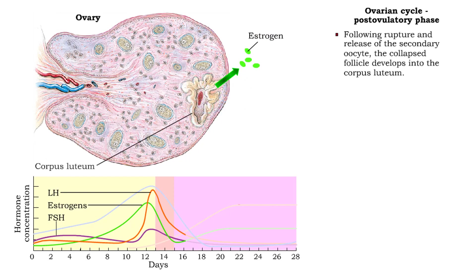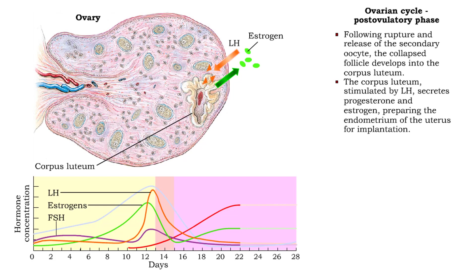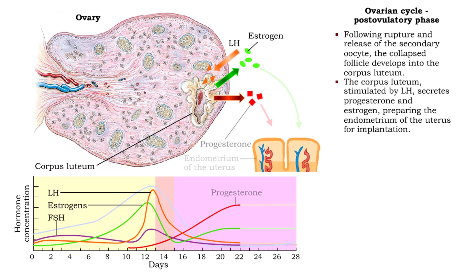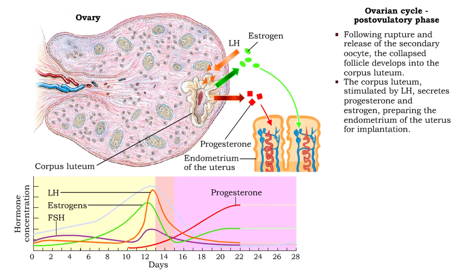After ovulation and the release of the secondary oocyte, the ruptured follicle collapses and becomes a corpus luteum. Stimulated by luteinizing hormone, the corpus luteum secretes progesterone and estrogen, which prepares the endometrium of the uterus for implantation.